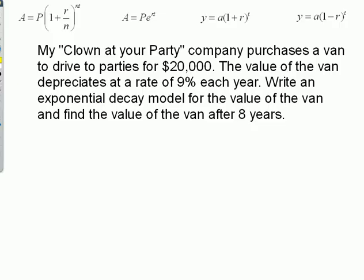I've got a clown at your party—it's a business called My Clown at Your Party company—purchases a van to drive to parties for $20,000. The value of the van depreciates—here's the key word—at a rate of nine percent per year. So which formula am I going to use? This one was the formula for interest compounded on a monthly or weekly or quarterly basis. This one was compounded continuously. Here's when things are going up in value—that plus ought to be the key. And this is when things are going down in value. So this is the one we're going to use.